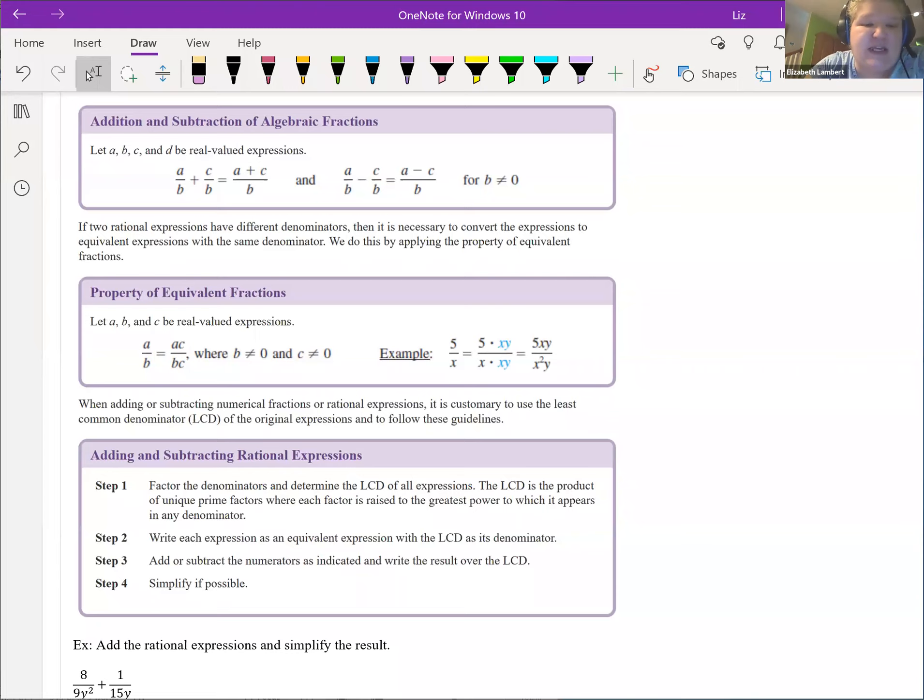So we're going to be making use of this idea of equivalent fractions, where we can multiply by a crazy form of one. C over C is one. C could be anything, so sometimes it's going to be x minus five over x minus five, or y plus three over y plus three. As long as you're multiplying the same thing to the top and the bottom, you're good to go.